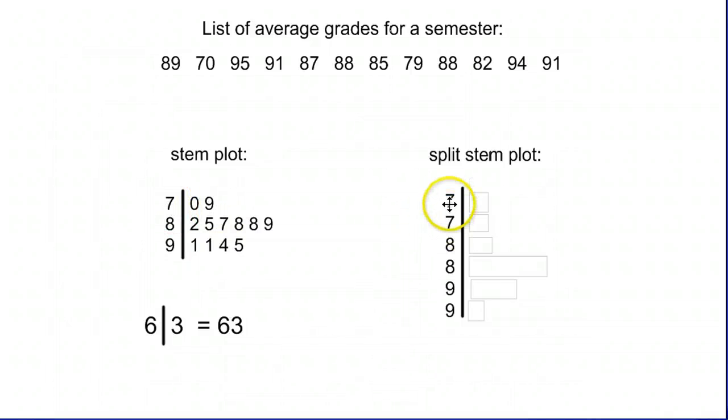All that means is you take your 70s and you break it into two different parts. Instead of 73 to 79 all in one big row, you do 72 to 74 and then 75 to 79. Same thing with the 80s - instead of 80 all the way up to 89 in one big row, you break it up: 80 to 84, 85 to 89.